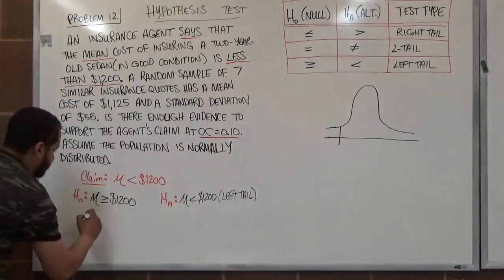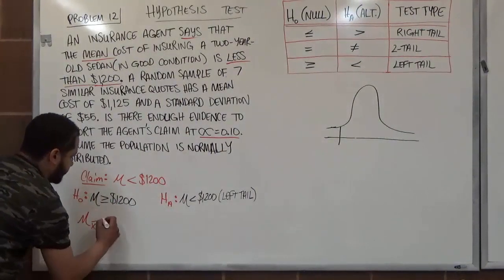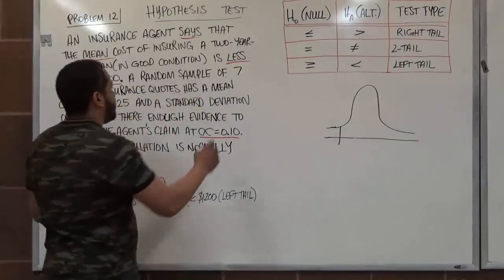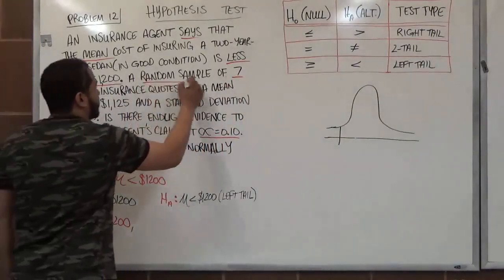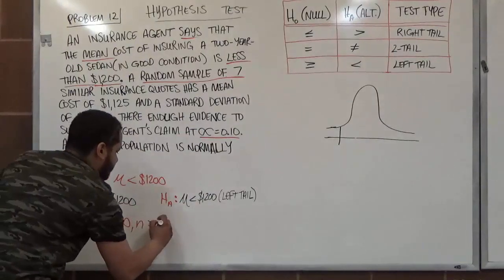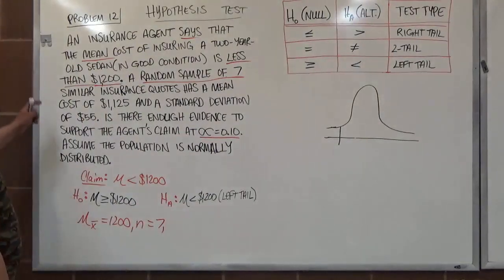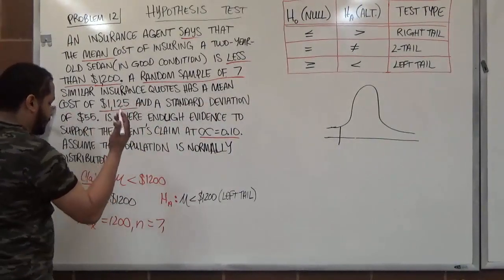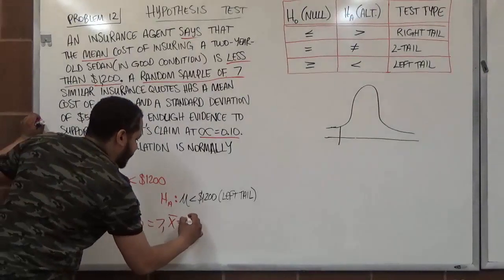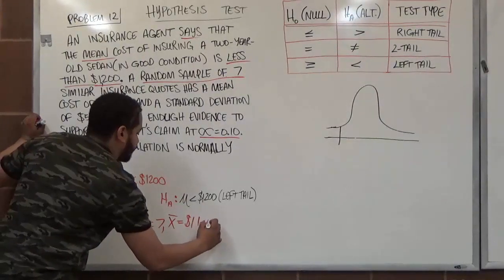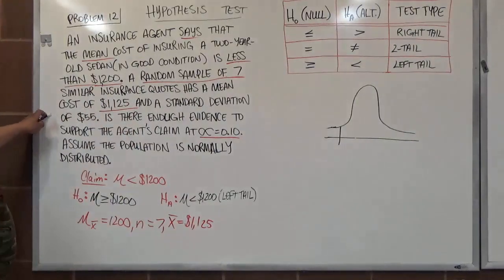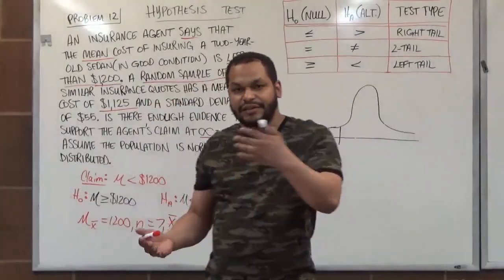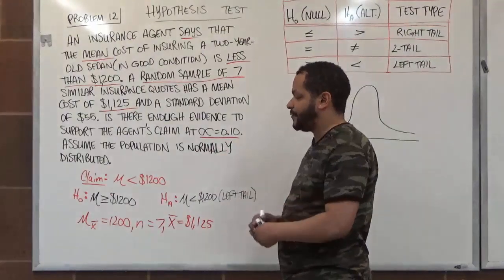From the problem we know: the population mean μ = $1,200, the sample size n = 7, and the sample mean x̄ = $1,125.